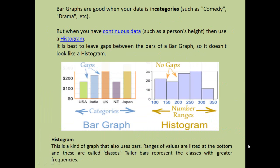Bar diagrams are good when your data is in categories such as comedy, drama, etc. But when you have continuous data, you present them in the form of a histogram. It is best to leave gaps between the bars of a bar graph so it doesn't look like a histogram.